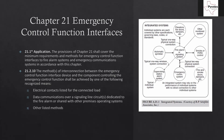The methods of interconnection between the emergency control function interface device and the component controlling the emergency control function shall be achieved by one of the following recognized means: electrical contacts listed for the connected load — that would be like a control relay used for dampers, elevator recall, or air handler shutdown; data communication over a signaling line circuit dedicated to the fire alarm or shared with other premises operating systems — that's how we communicate with the ECS system; or other listed methods. Most of these are going to be covered by one or two.